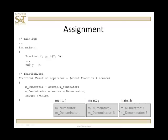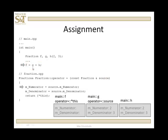And g is going to then become the source, and f becomes the calling object in the next assignment. So let's step through that again: f is the calling object and g is source. So the numerator of source is assigned to the calling object, and that becomes 2. And then the denominator of source is assigned to the denominator of the calling object, and we've completed the assignment.